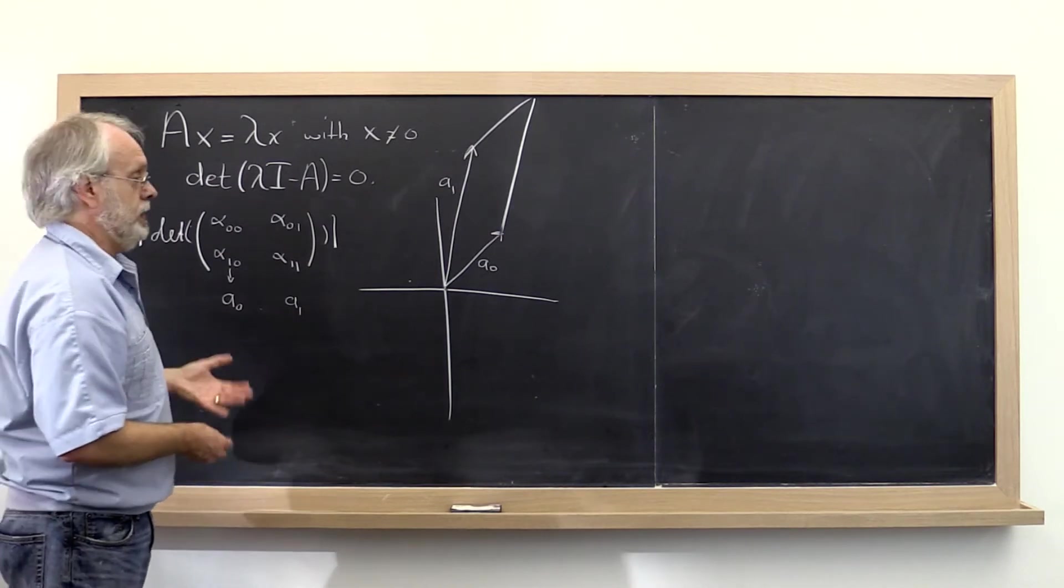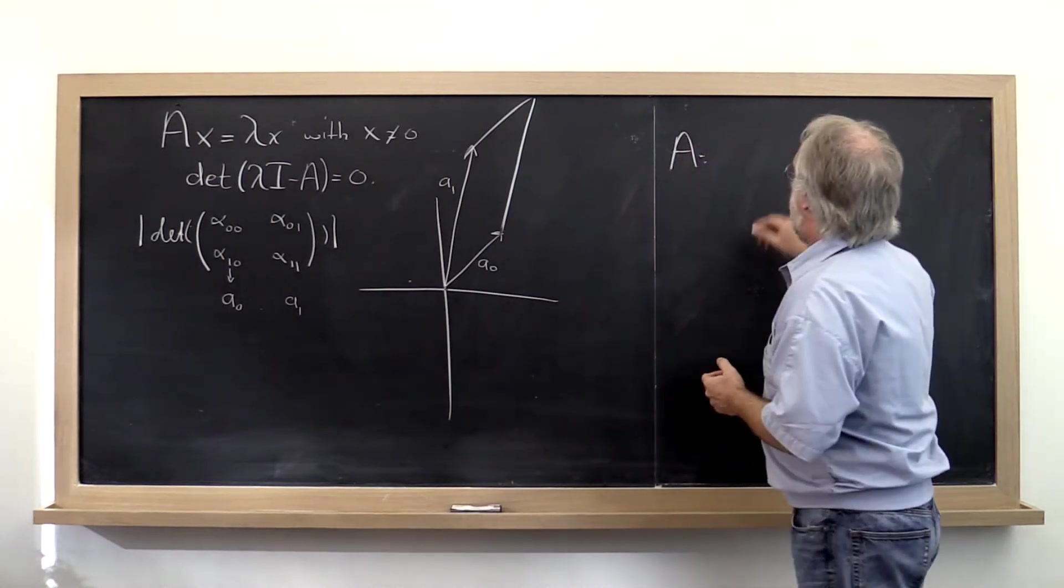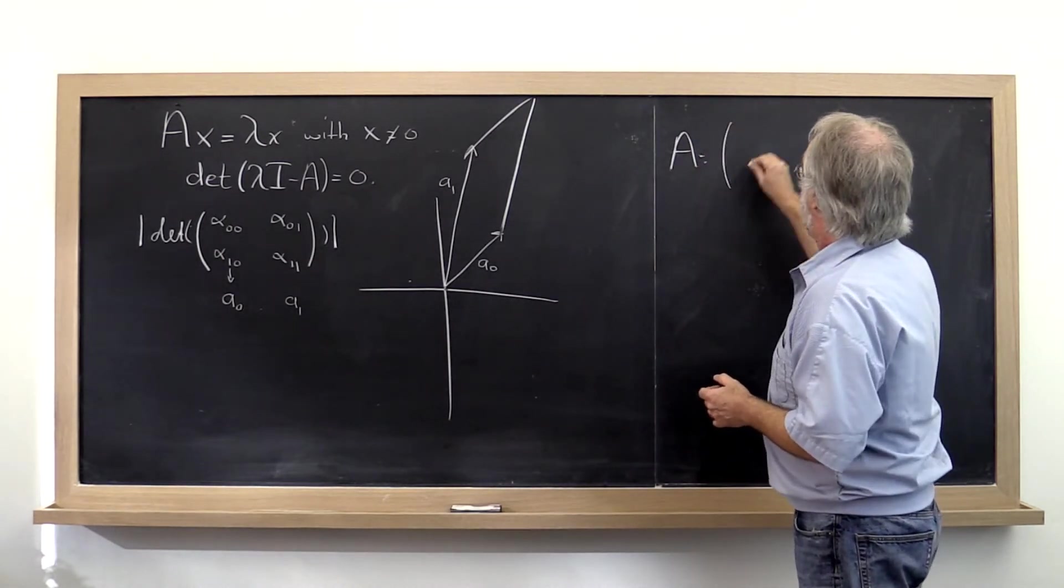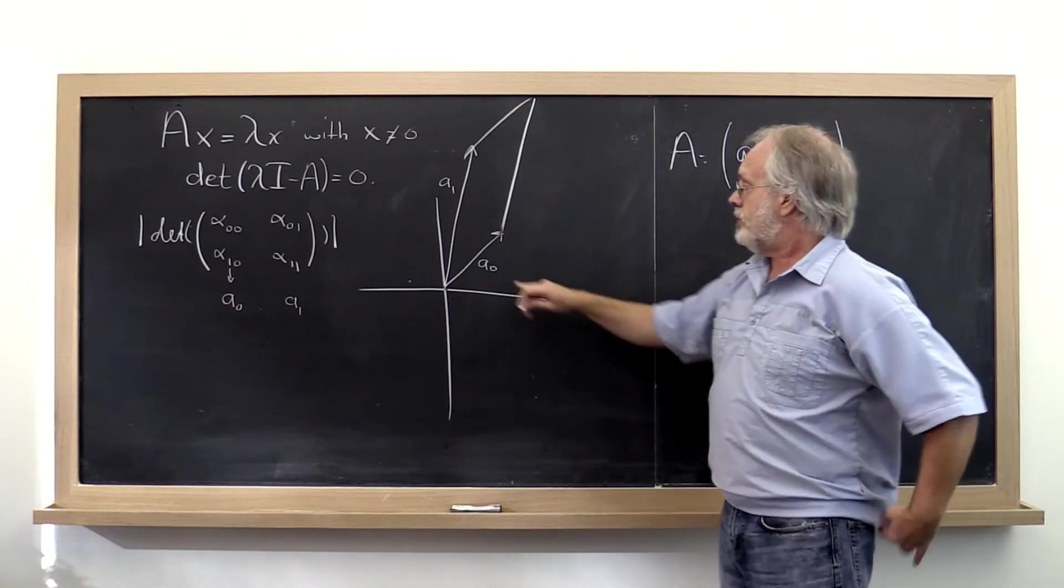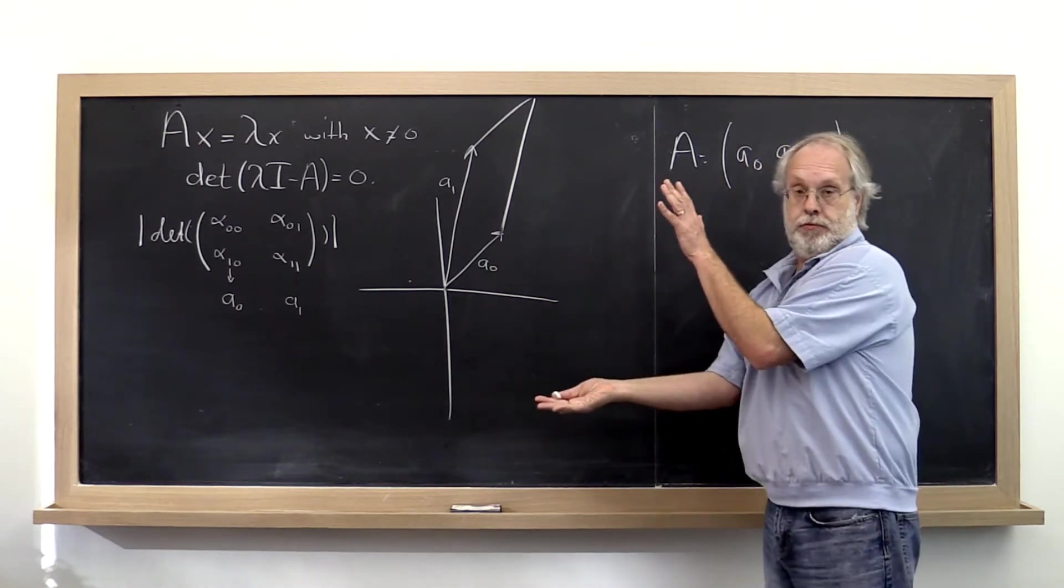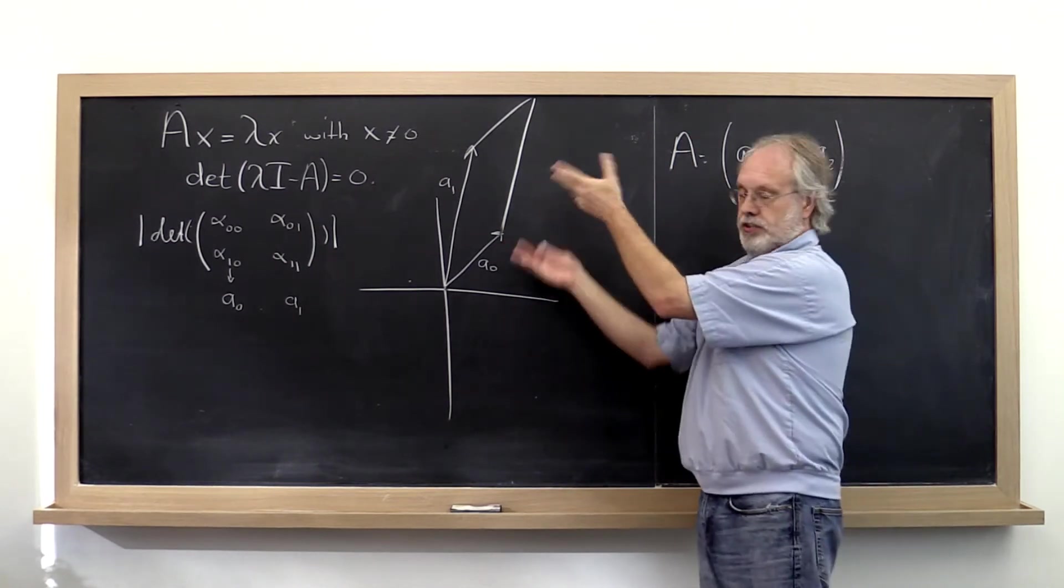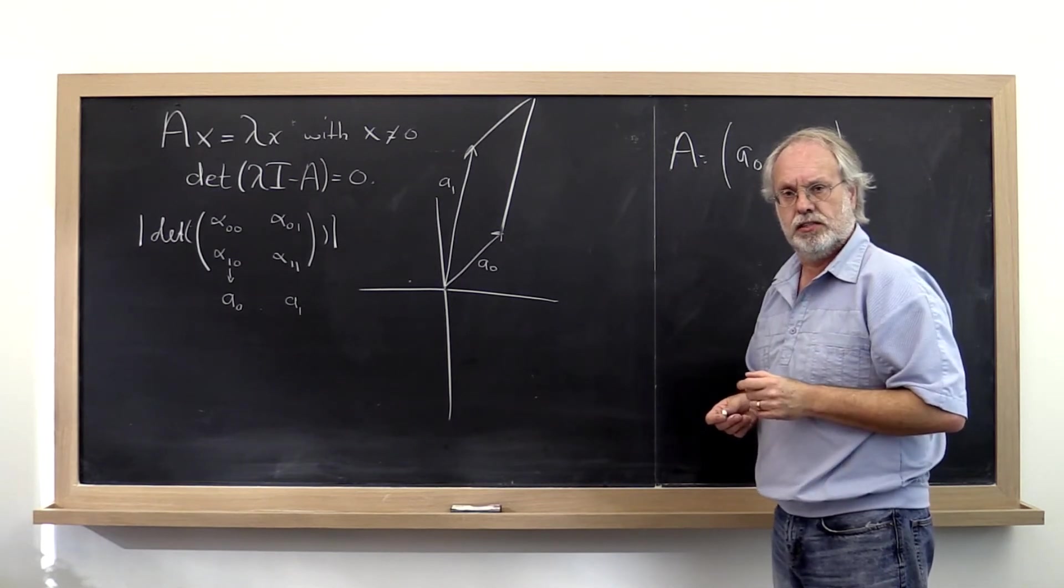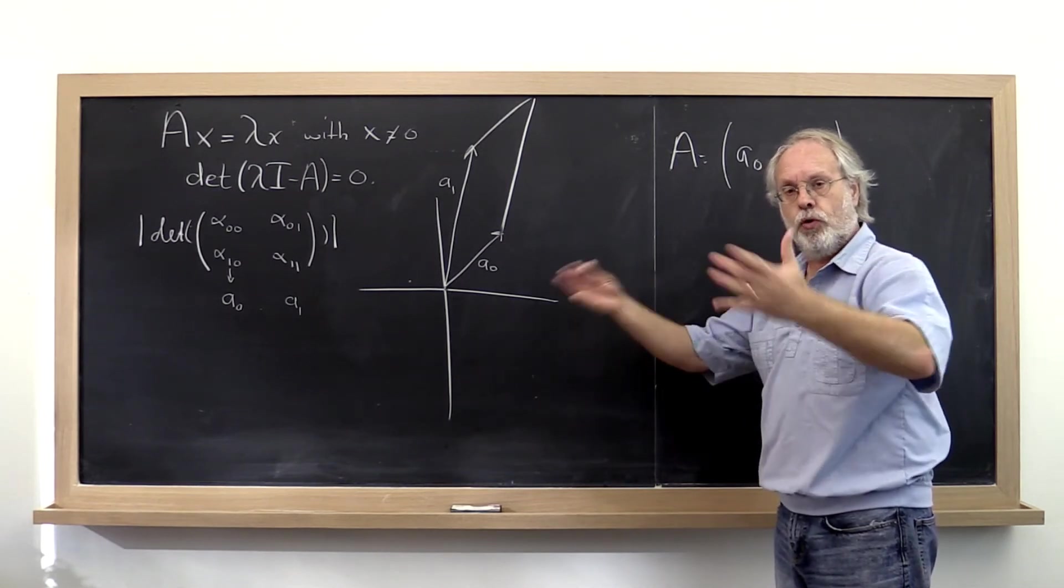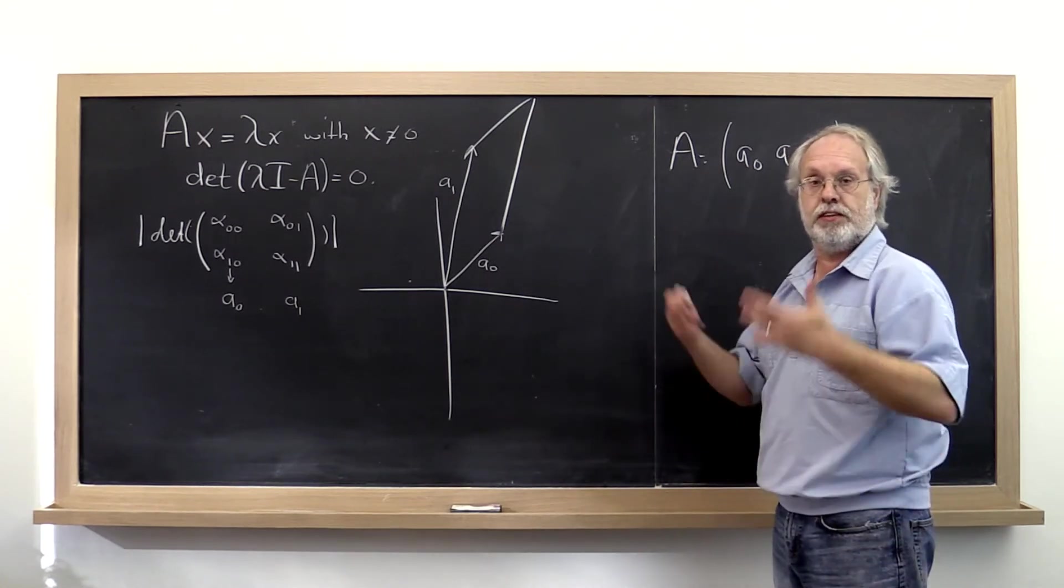Now similarly, if you go to a matrix A that has three columns, then the determinant is the volume of whatever the natural extension of a parallelogram is. And if you go to four dimensions, you get the natural extension to four dimensions, whatever that looks like.